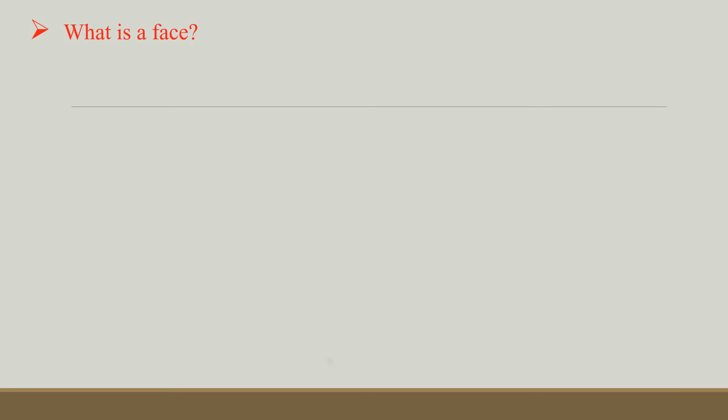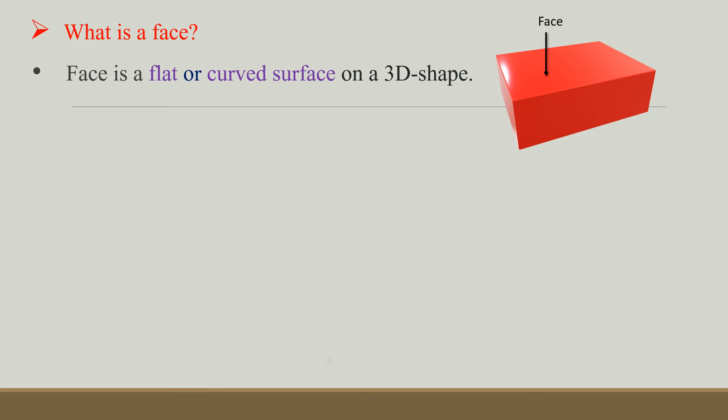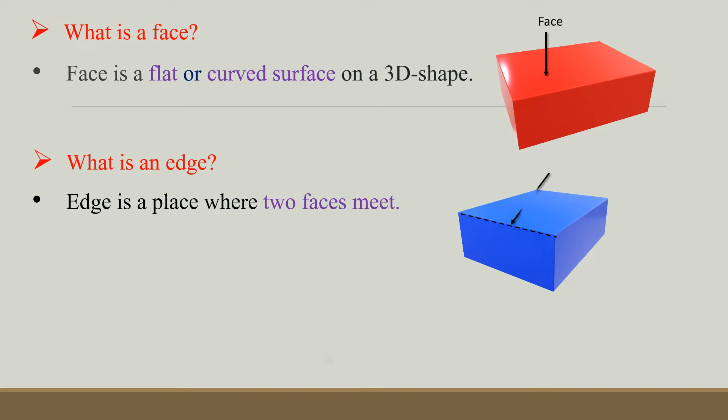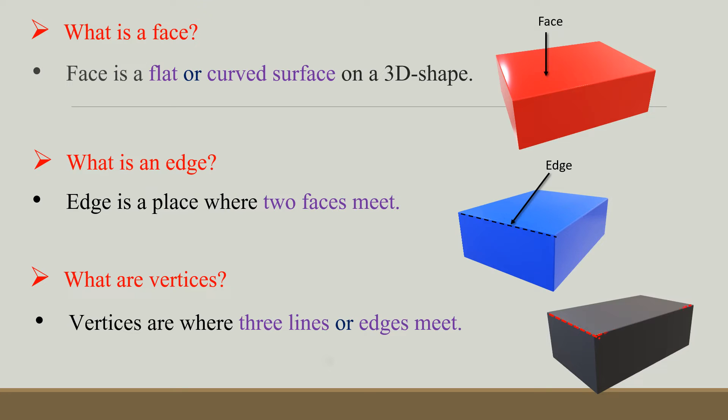What is a face? Face is a flat or curved surface on a 3D shape. What is an edge? Edge is a place where two faces meet. What are vertices? Vertices are where three lines or edges meet.